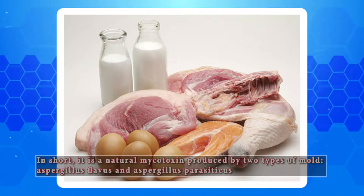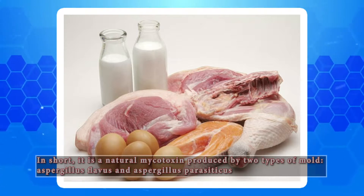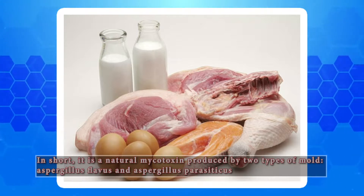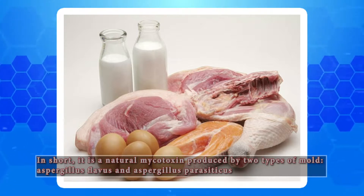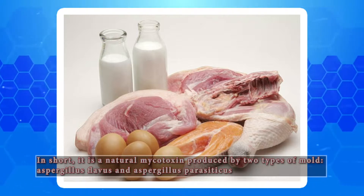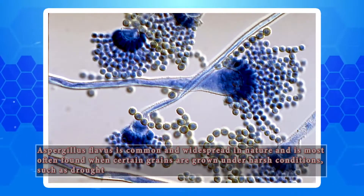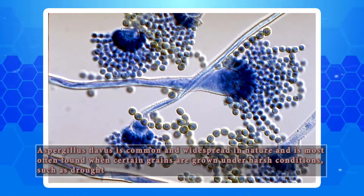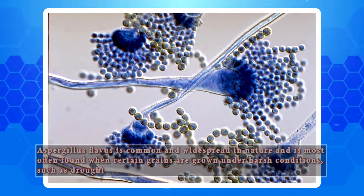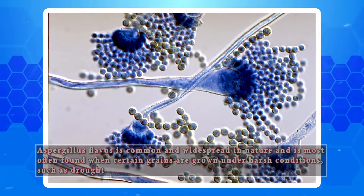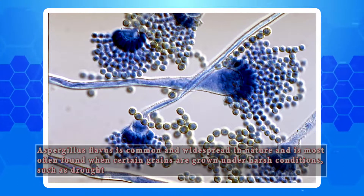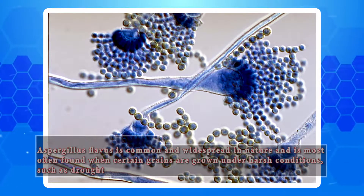In short, it is a natural mycotoxin produced by two types of mold: Aspergillus flavus and Aspergillus parasiticus. Aspergillus flavus is common and widespread in nature and is most often found when certain grains are grown under harsh conditions such as droughts.